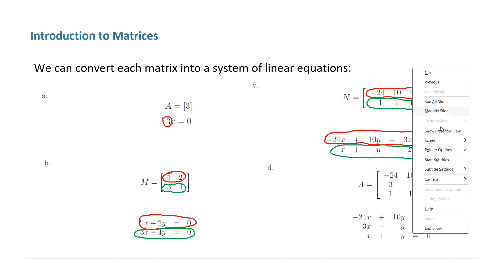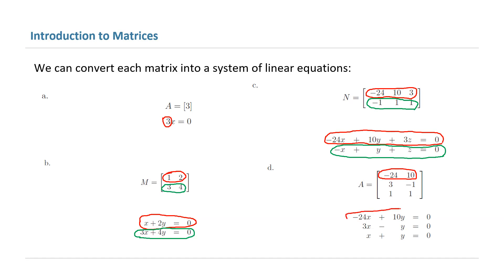And finally, the last matrix can convert into a system of equations. Here you have negative 24 and 10 as the elements on the first row, so you get negative 24x plus 10y equal to 0.